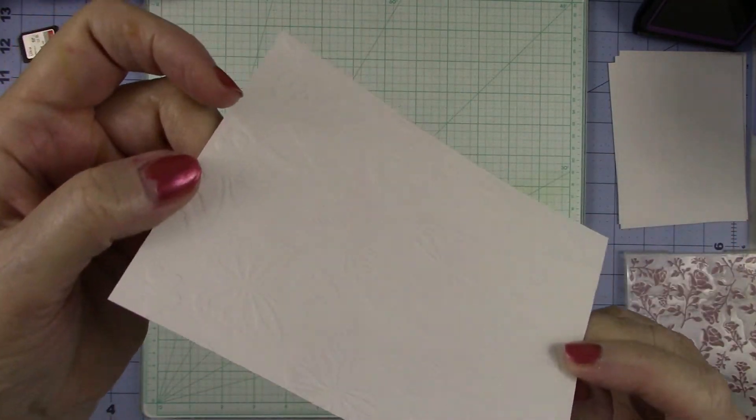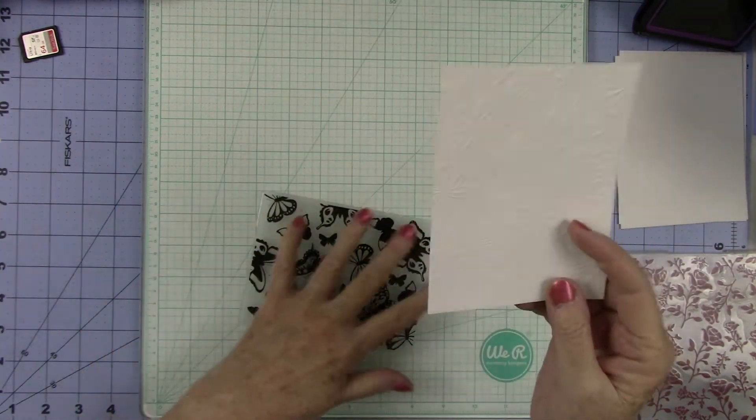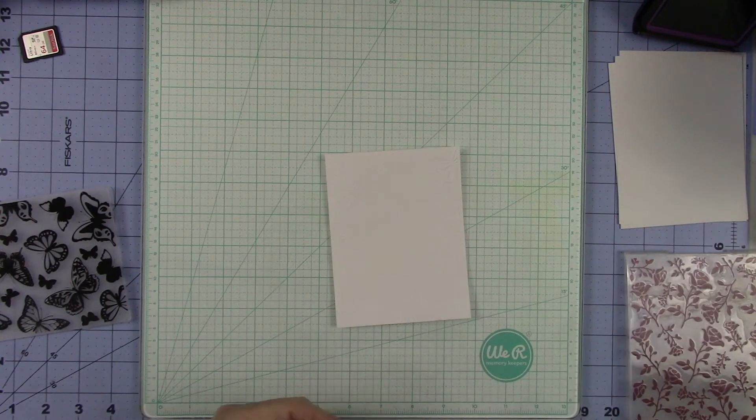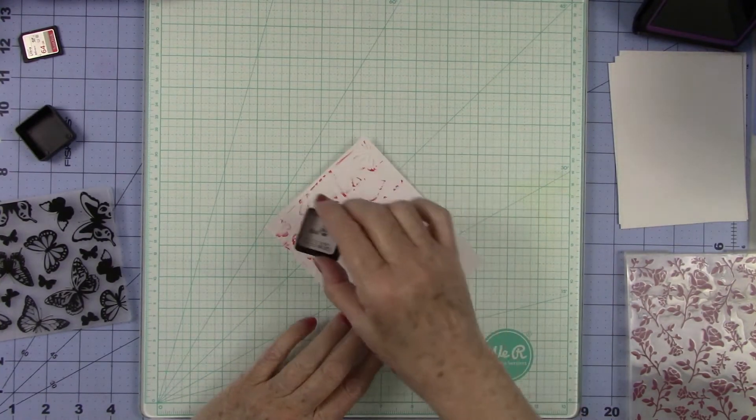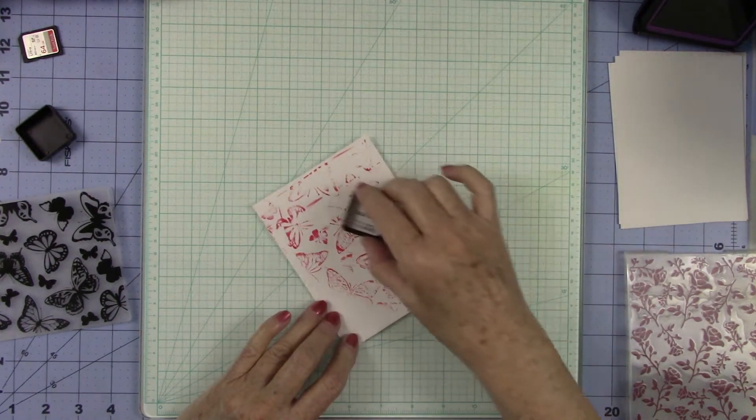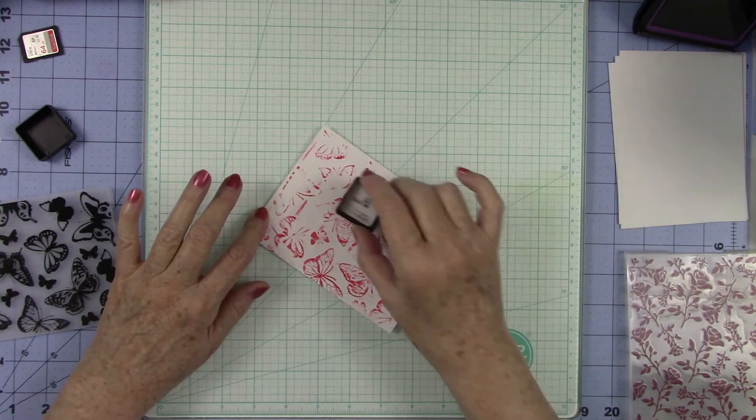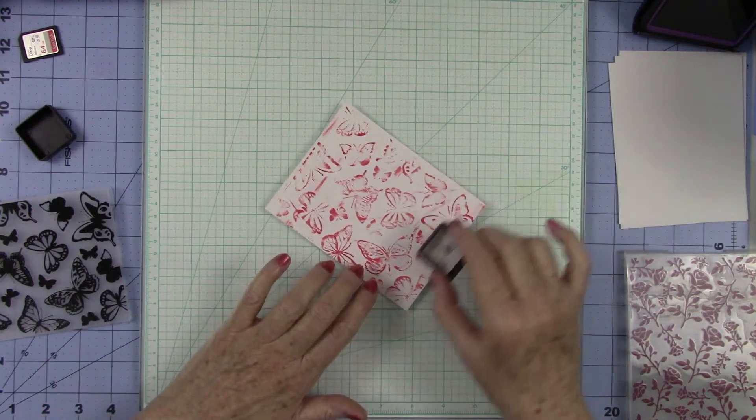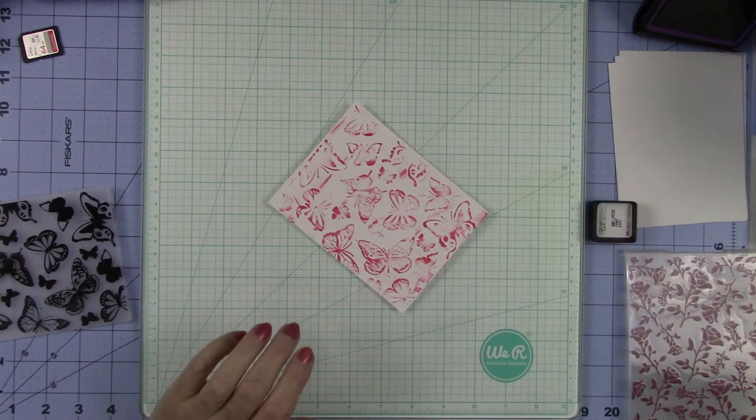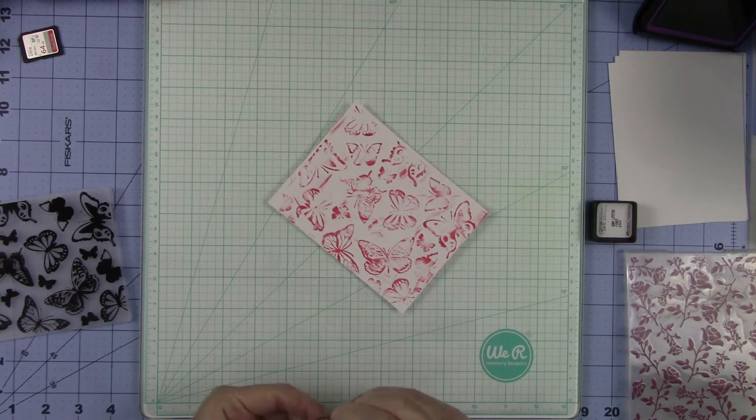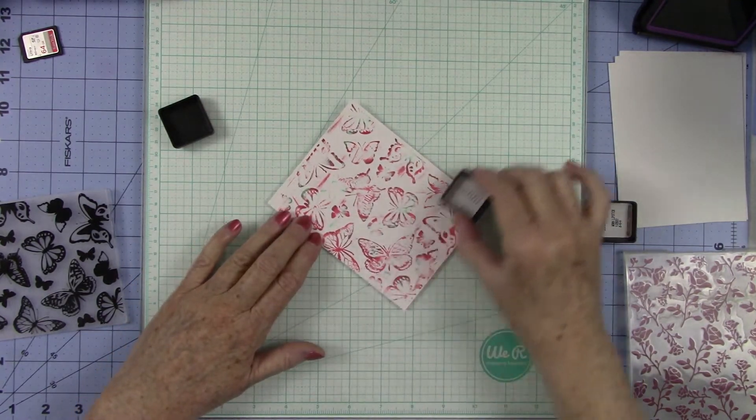When you pull this out, this is what you have. I'm hoping my light is catching that this morning or not, but you have this raised and lowered edge. Let me drag some ink over top of this and you will see what I'm talking about. So I'm just going to take my ink and I'm going to drag it. Now you can see where those raised areas were.